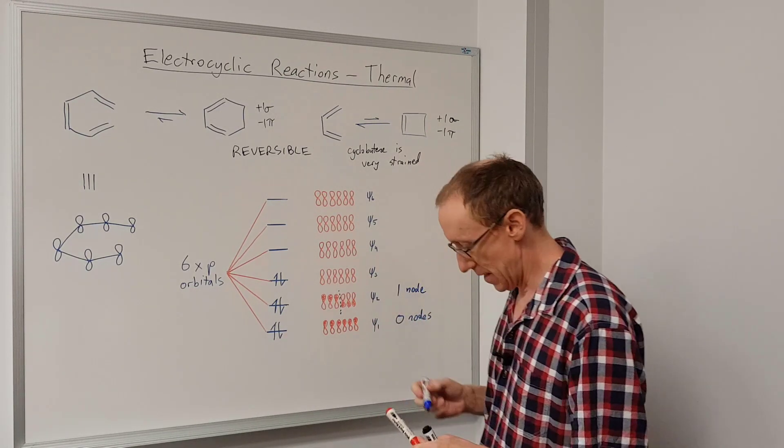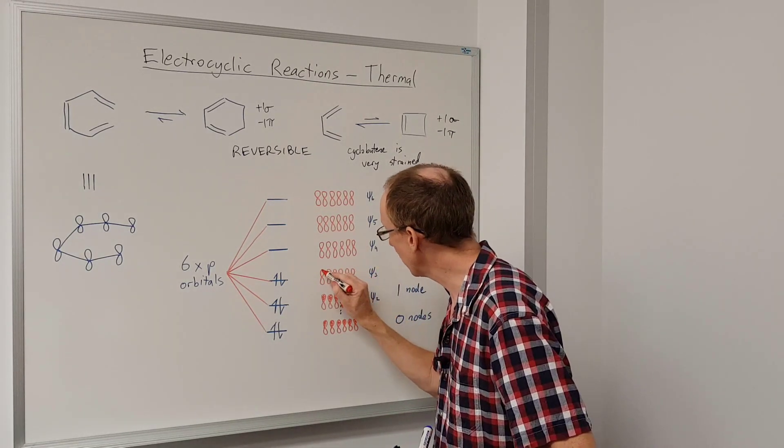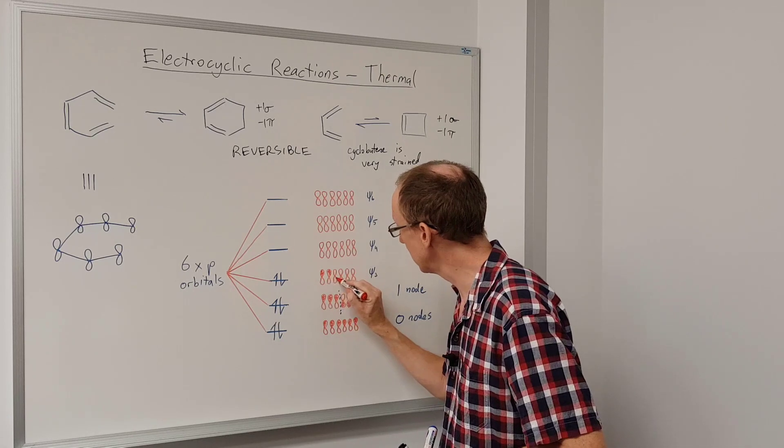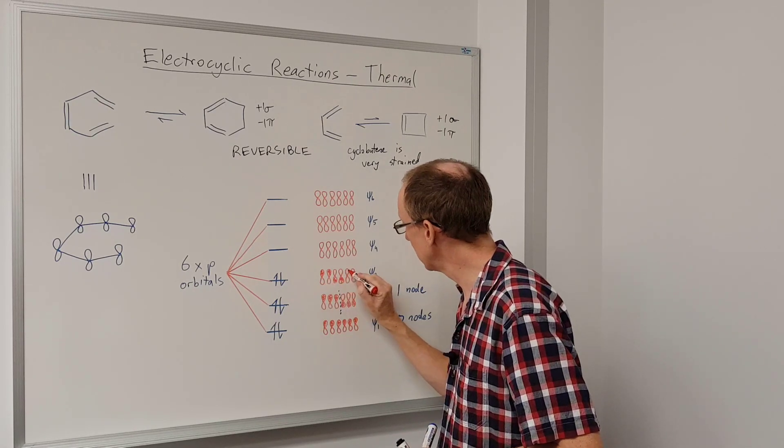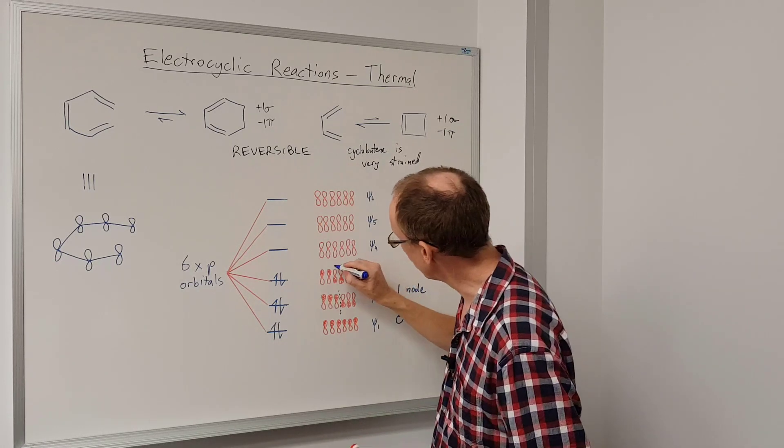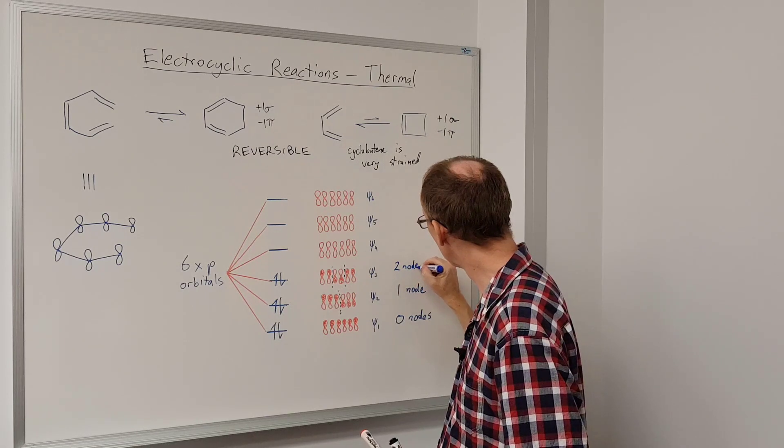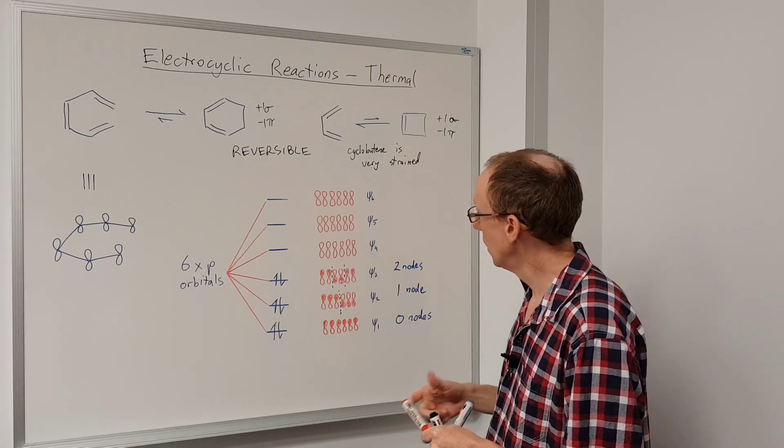And then we can go forward with the others. So here we're going to have these two in phase, these two in phase, and these two in phase. And we're going to have two nodes.